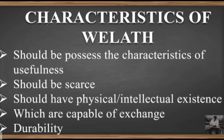Examples of wealth possessing the characteristic of usefulness include house, vehicles, and precious jewelleries. These are items that satisfy human wants and needs. So wealth must possess the characteristic of usefulness. These items can be possessed as wealth.